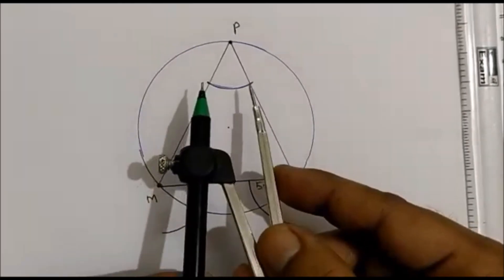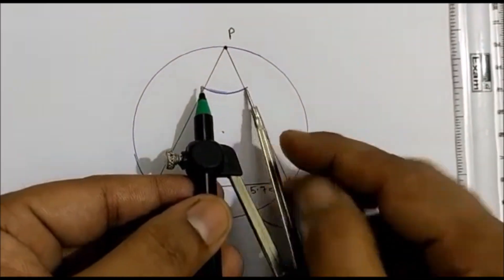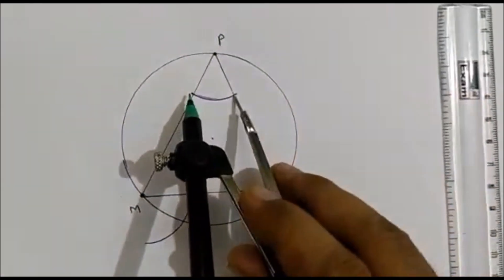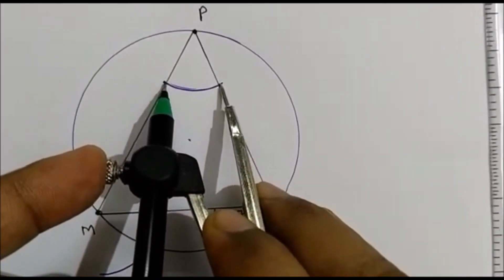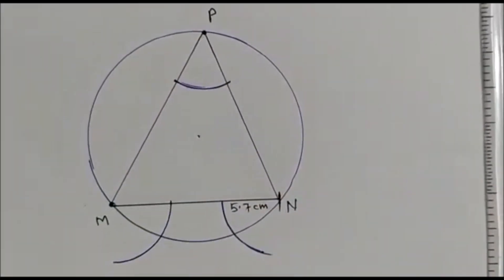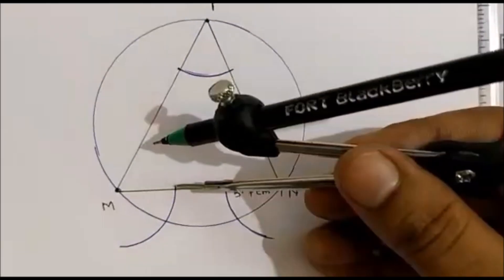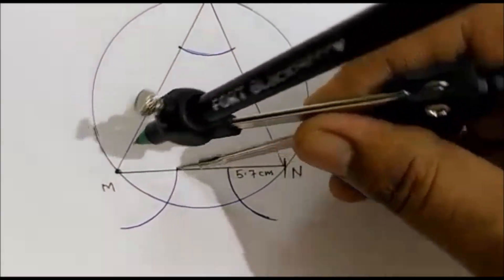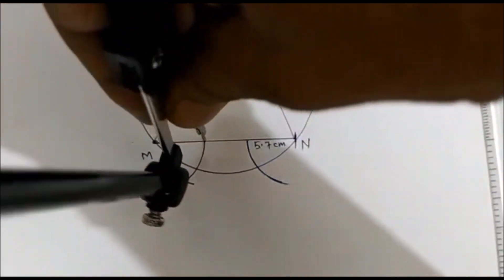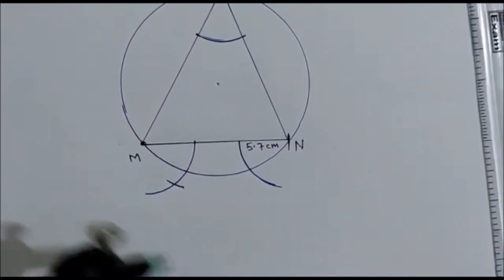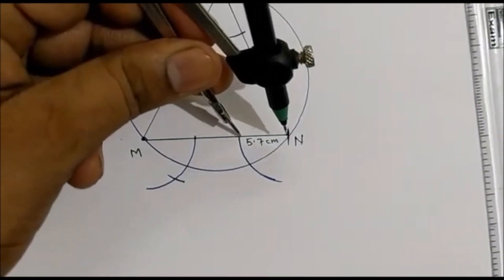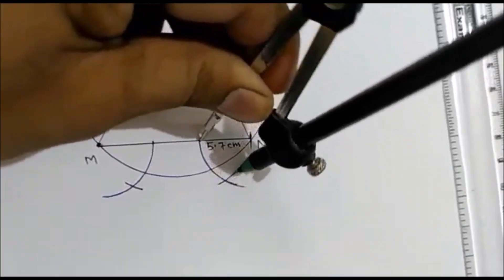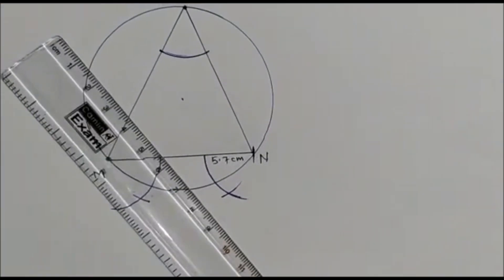Now after this, we will take this distance — from this point to this point. Take the distance with the compass. Now keep this on chord MN, keep the compass here, and cut the previous arc. Similarly here, cut at this point and cut the previous arc.